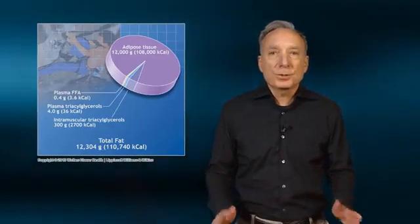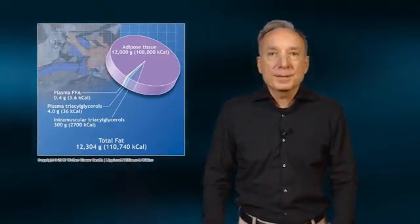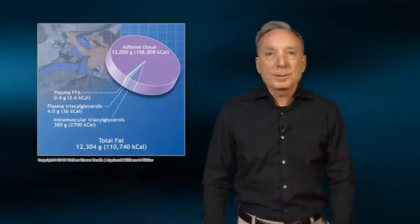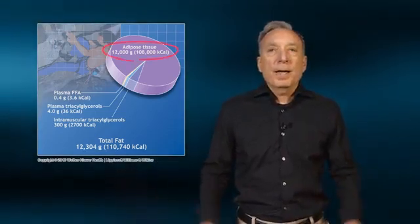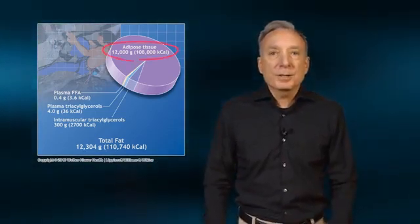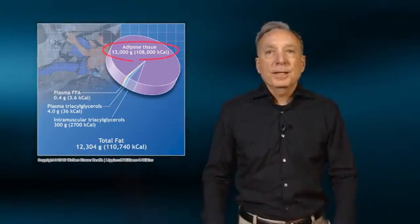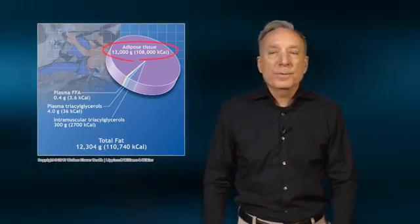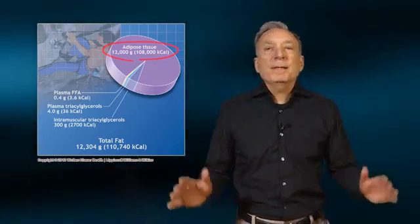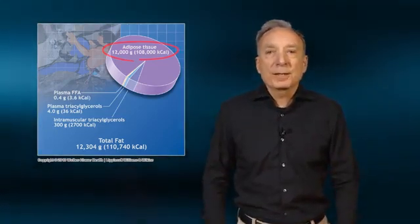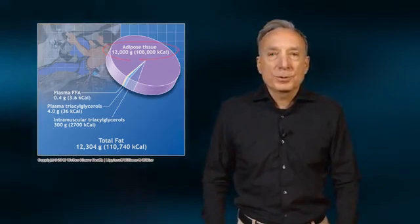The two primary sites for triglyceride storage are in adipose or fat cells and in skeletal muscle. By far, adipose tissue contains the largest amount of triglycerides. As you can see, even in an average 154-pound individual, there is a tremendous amount of energy in the form of triglycerides stored in adipose tissue.